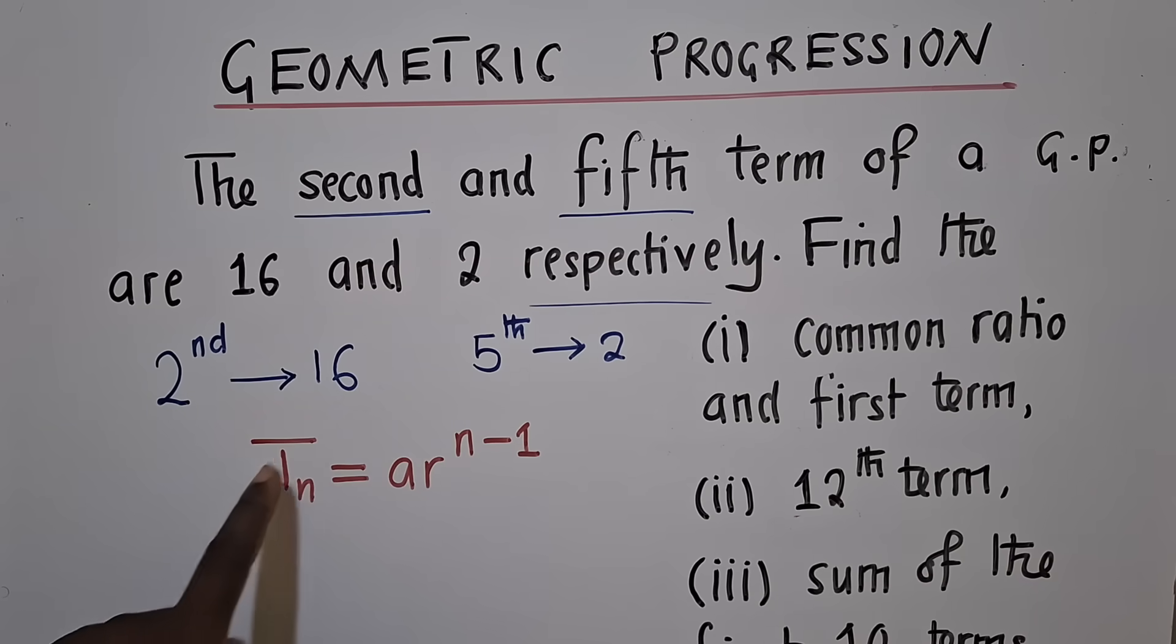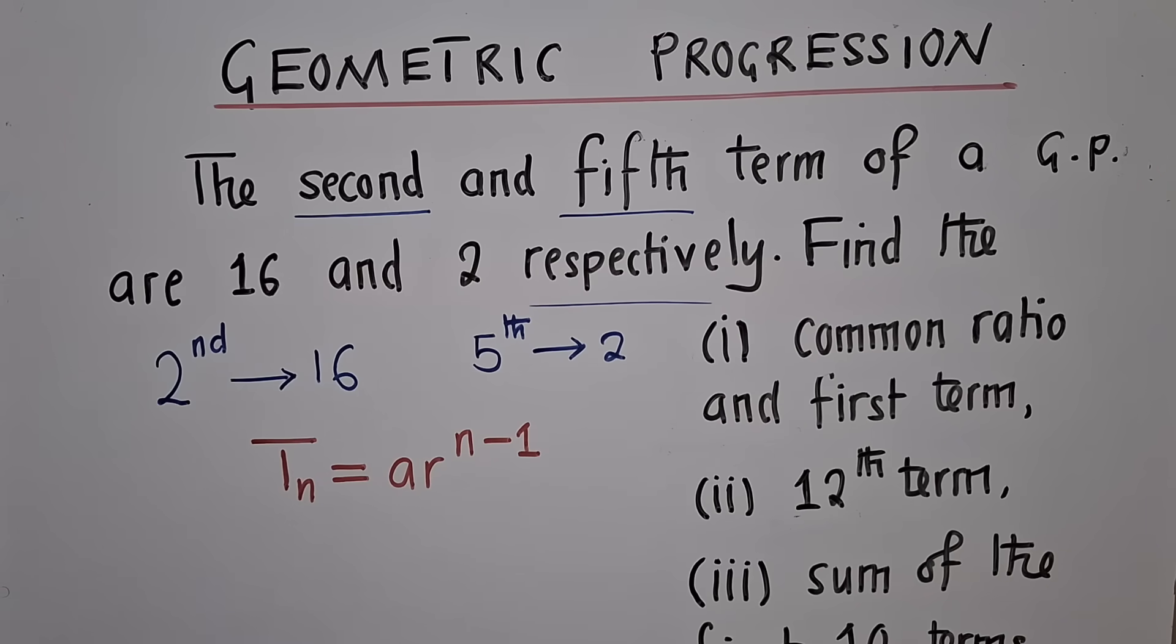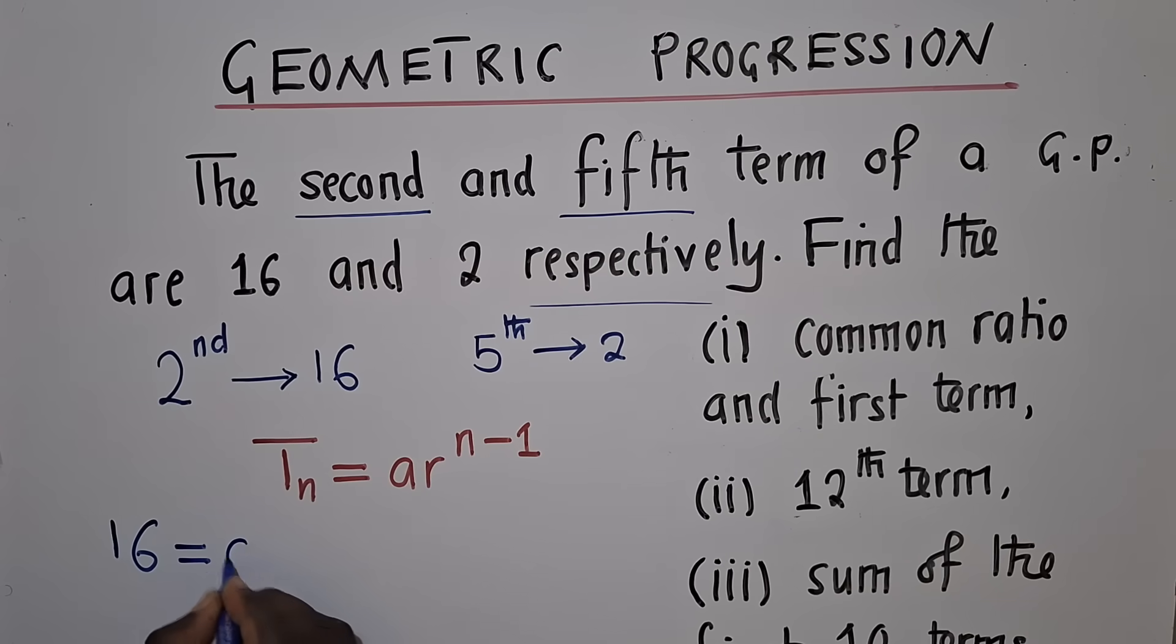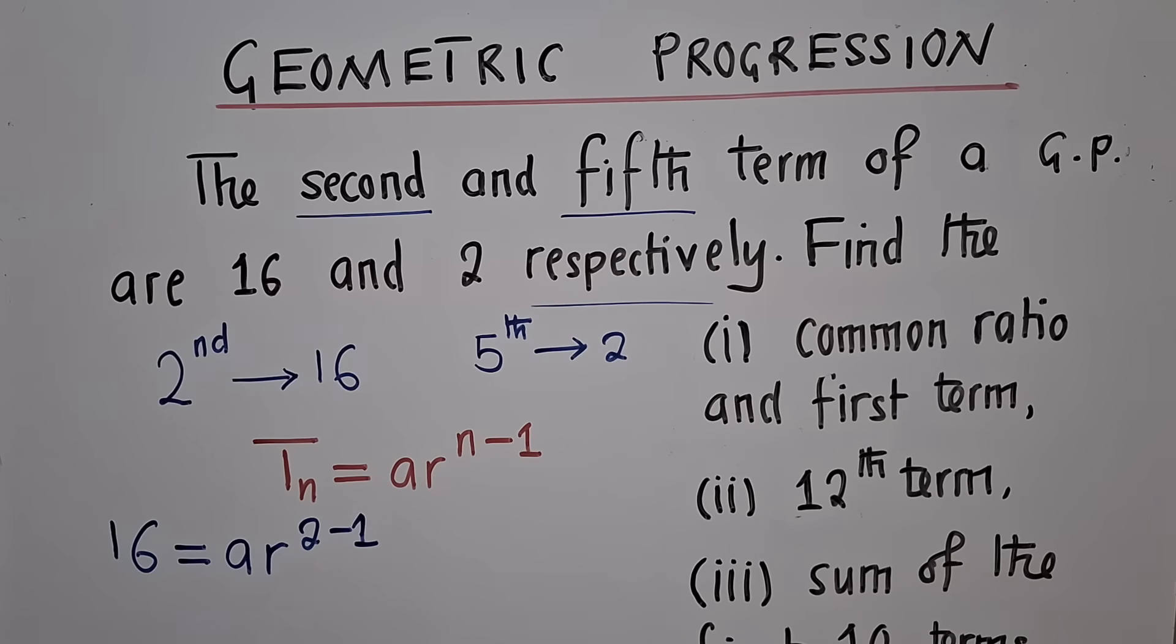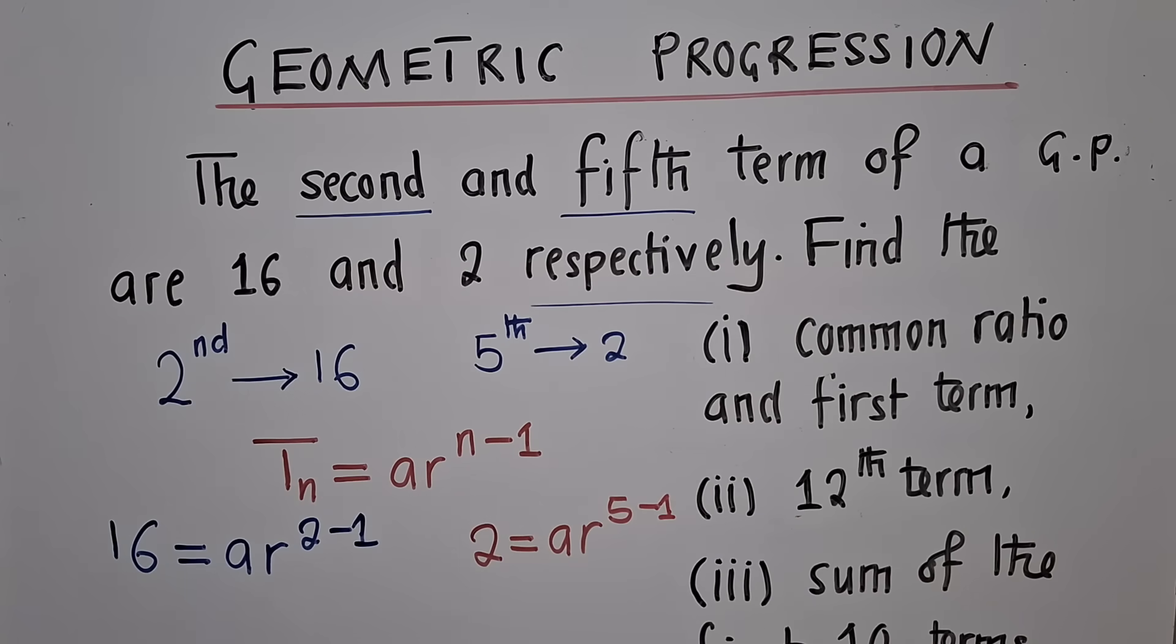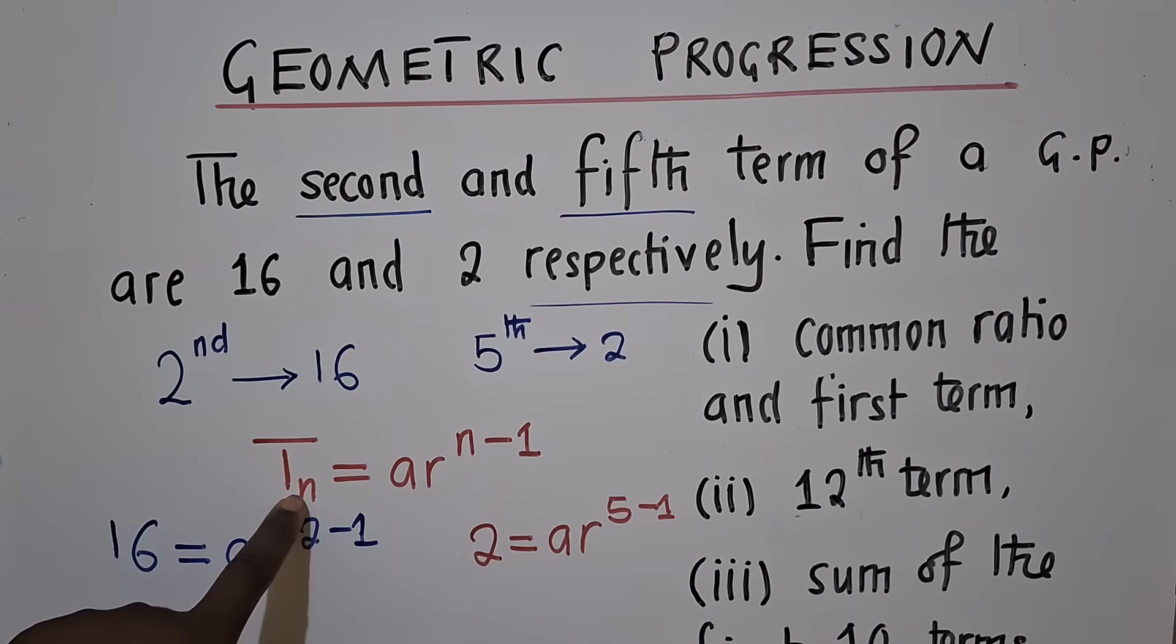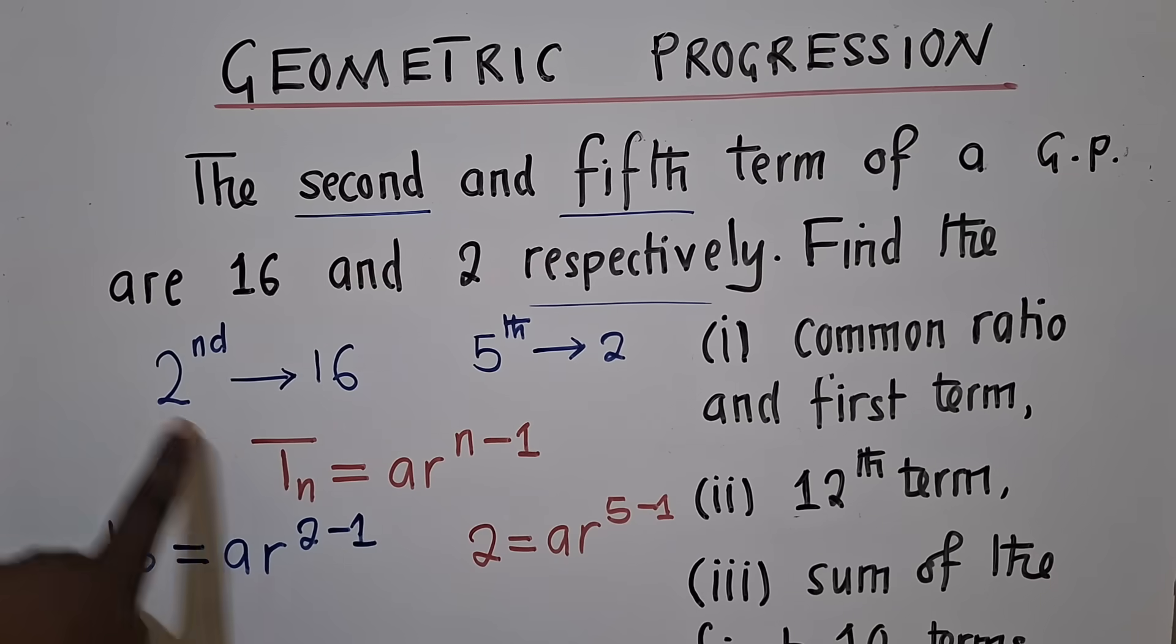At position two, what number is there? We have a 16. So we're going to write 16 is equal to A R power 2 minus 1. Another equation which we are going to form: 2 is equal to A R power 5 minus 1. So if you are following nicely, you'll be able to tell that whichever term that we have, I'm writing it here. You see the way it looks? And for N, that's the position second. You see how it looks?